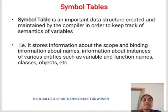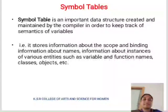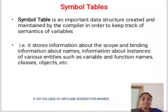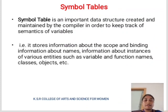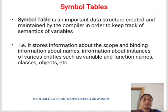Symbol Table is an important data structure created and maintained by the compiler in order to keep the record of the semantics of the variables. That is, it stores information about the scope and binding information about the name, information about instances of variable entities such as variables and function names, classes, objects, etc.